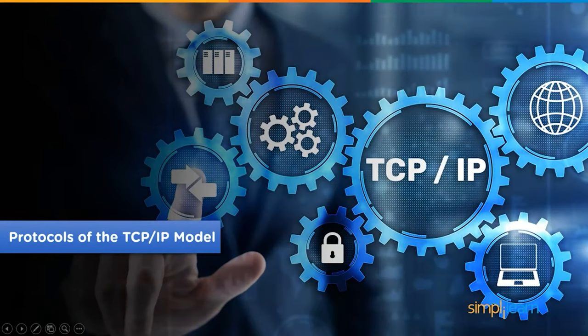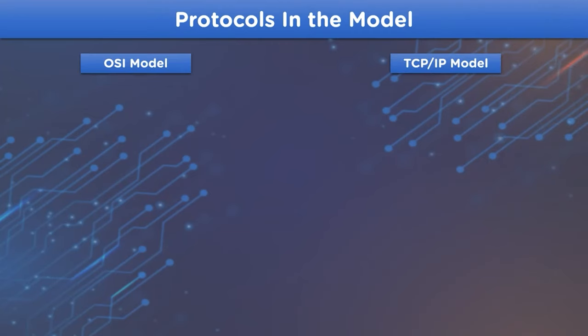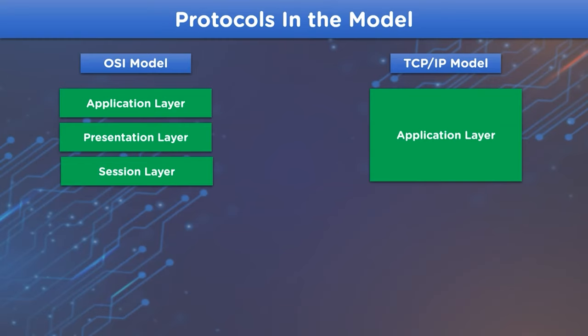Now let's continue with the protocols used in the TCP/IP model. To understand them, we'll compare with the OSI model. The topmost three layers of the OSI model — application layer, presentation layer, and session layer — collectively refer to the application layer in TCP/IP, where they use protocols such as FTP (File Transfer Protocol), HTTP (Hypertext Transfer Protocol), Telnet, and SMTP (Simple Mail Transfer Protocol).